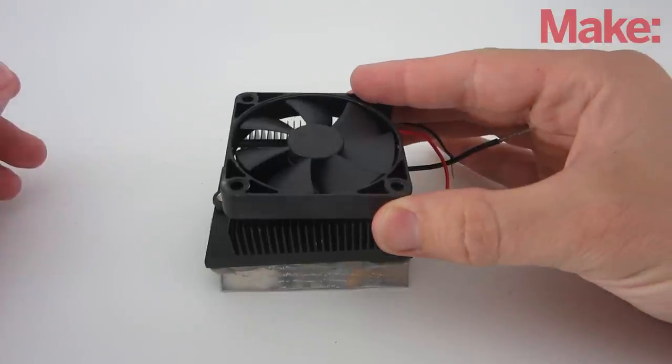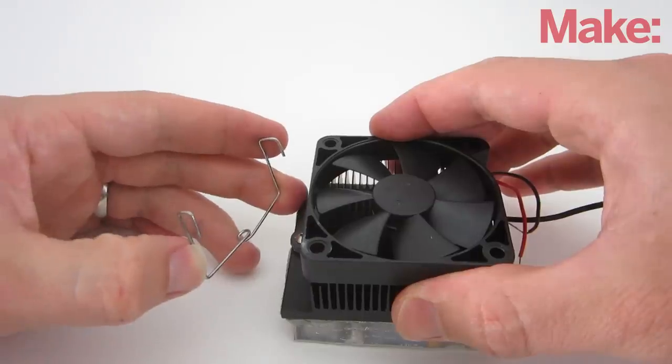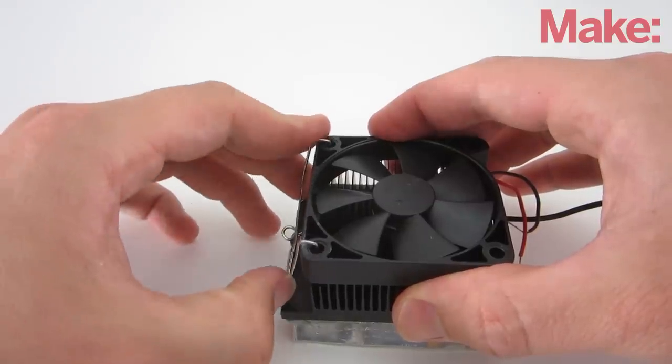The last thing that I added was a small fan to blow over the heat sink. This can be any small 12 volt PC fan. To hold it in place, I just used a pair of bent paper clips.